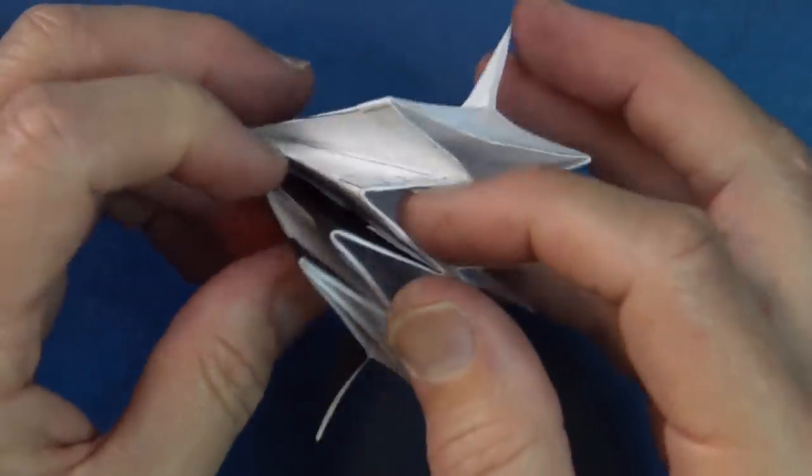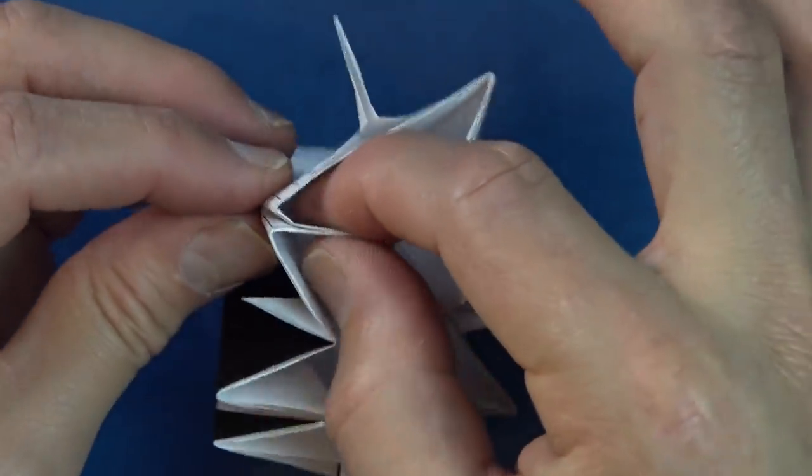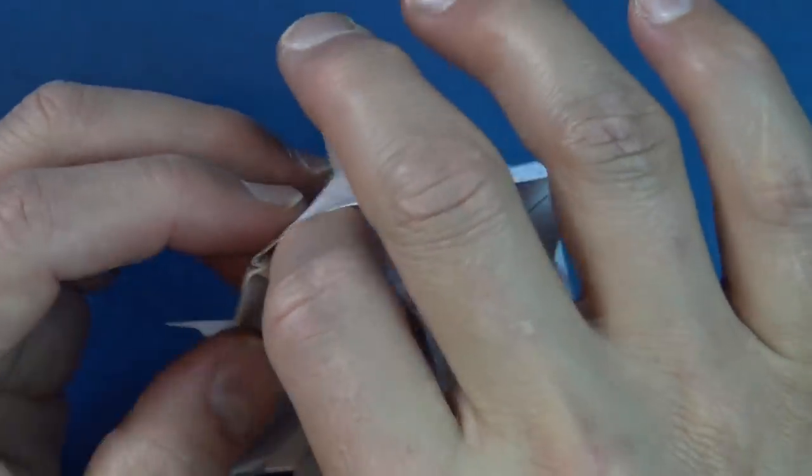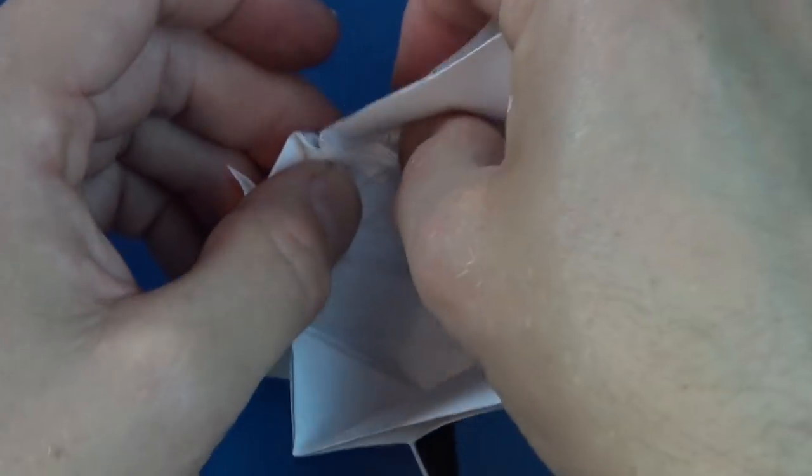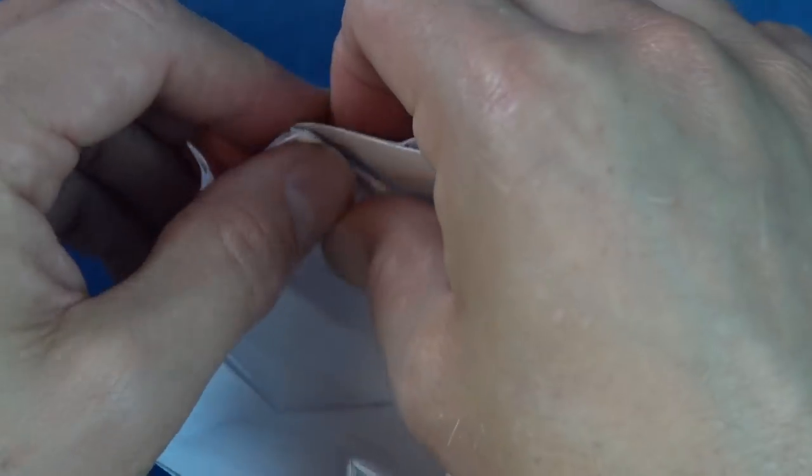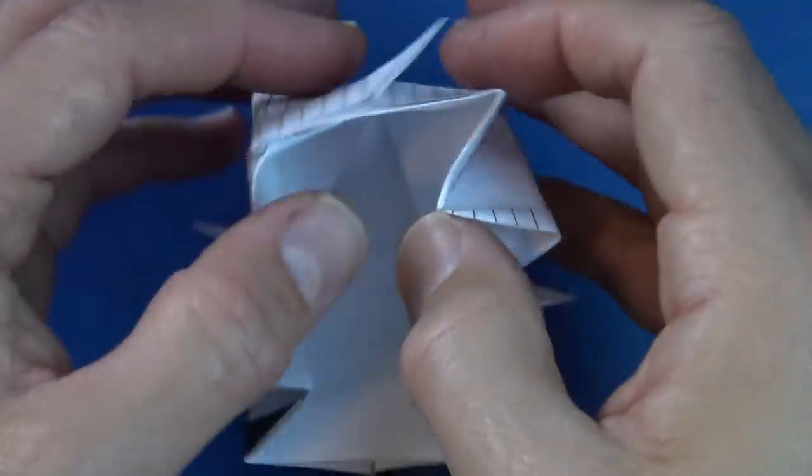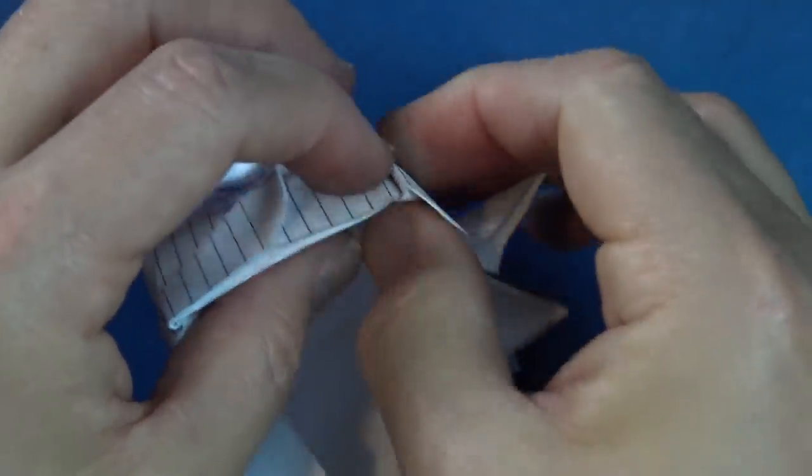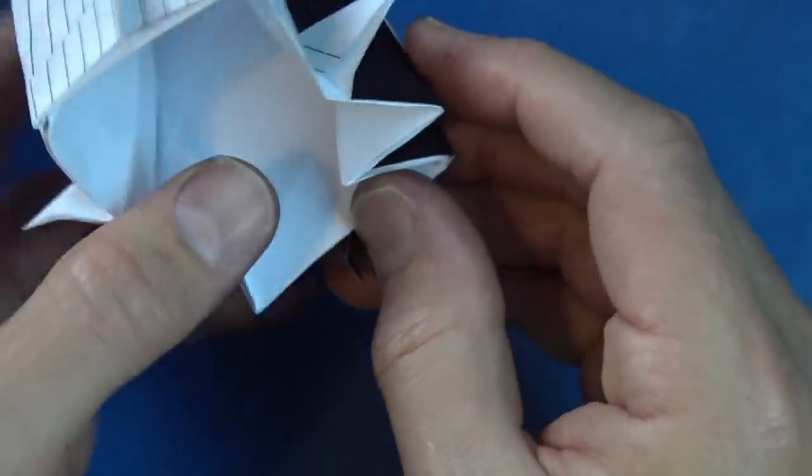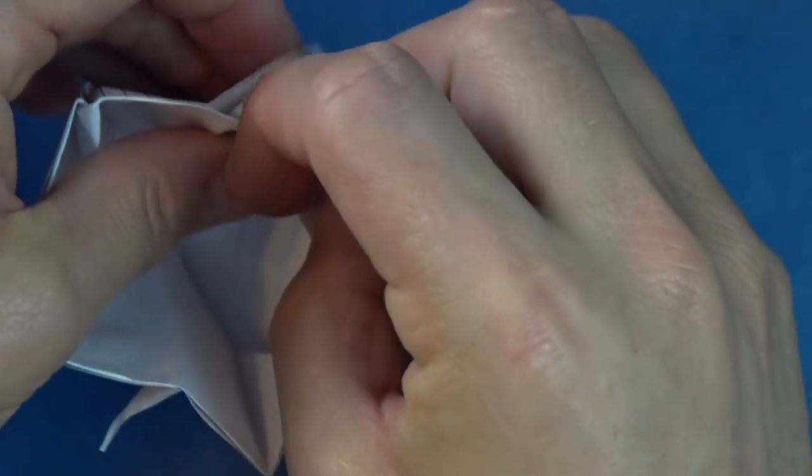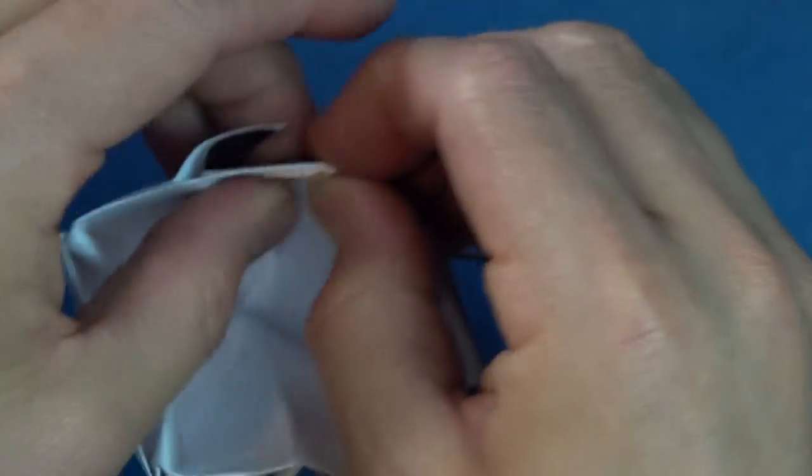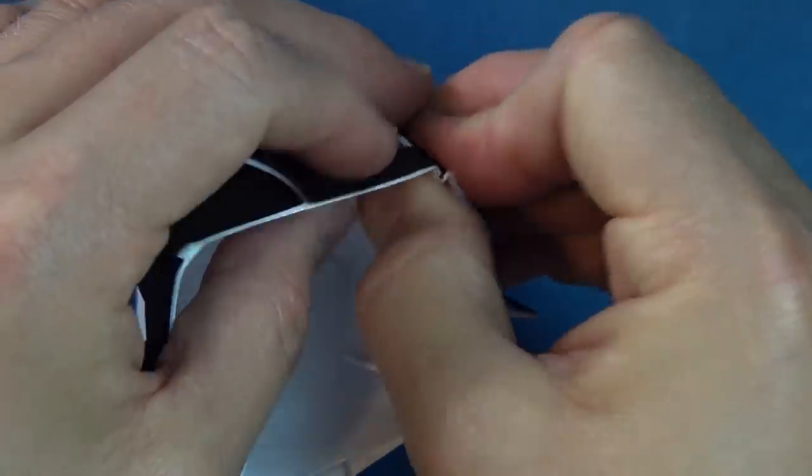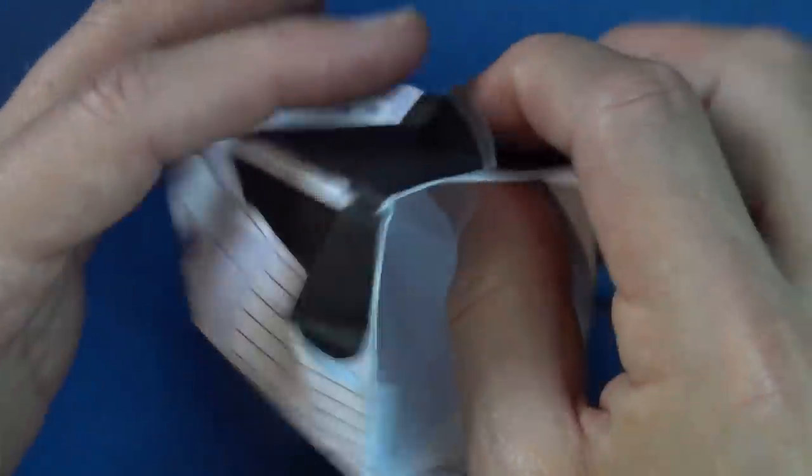And now to lock it. All you have to do is take this flap. This interior flap. And fold it to that back edge. Like that. So it goes to that back edge. And then just fold it up so that it holds in place. And do the same thing on the other three flaps. Like that. Okay.